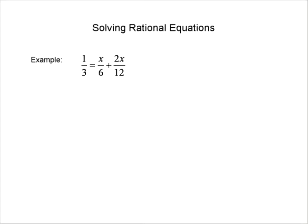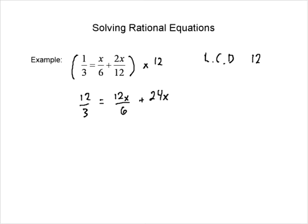Let's take this equation and get rid of the fractions. To do that, we need to multiply by the lowest common denominator. In this case, the lowest common denominator is just 12, since all the denominators happen to be numbers. So we multiply everything by 12, being careful to do the same to both sides. Multiplying gives us 12 over 3 on the left, and 12x over 6 plus 24x over 12 on the right.